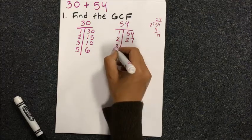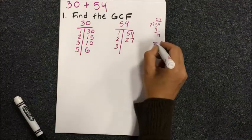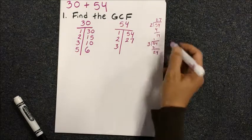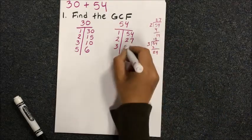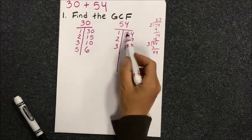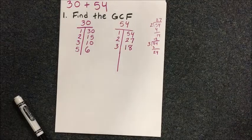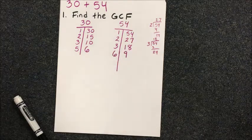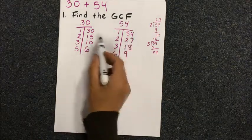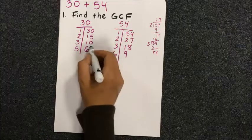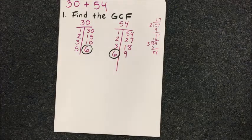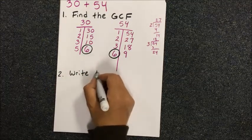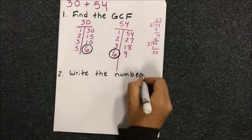One trick I like is that if the two digits can be added together and they are divisible by 3, then the whole number is divisible by 3. So 5 and 4 is 9, which is divisible by 3, which means the whole number 54 is divisible by 3. When you're done with the list, compare them and find the GCF, which should stand out that 6 is the GCF.